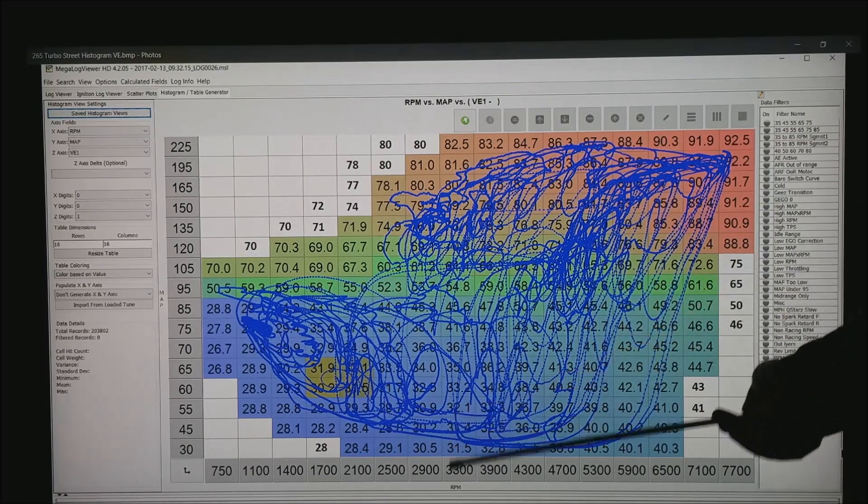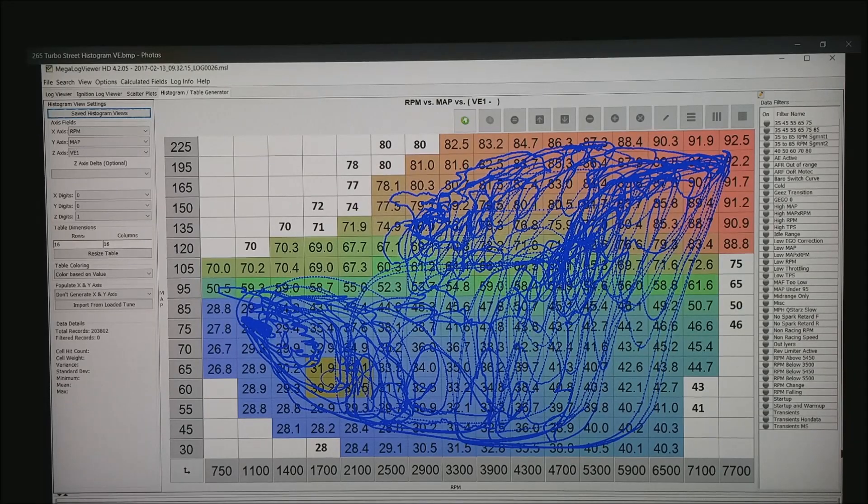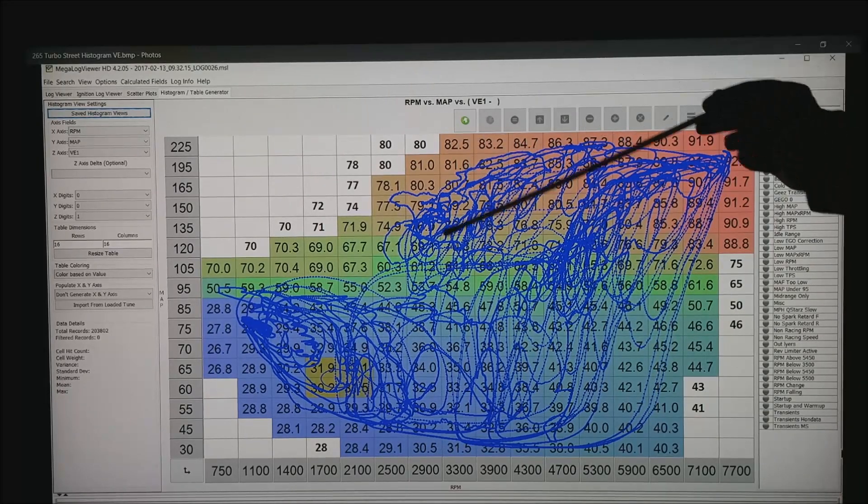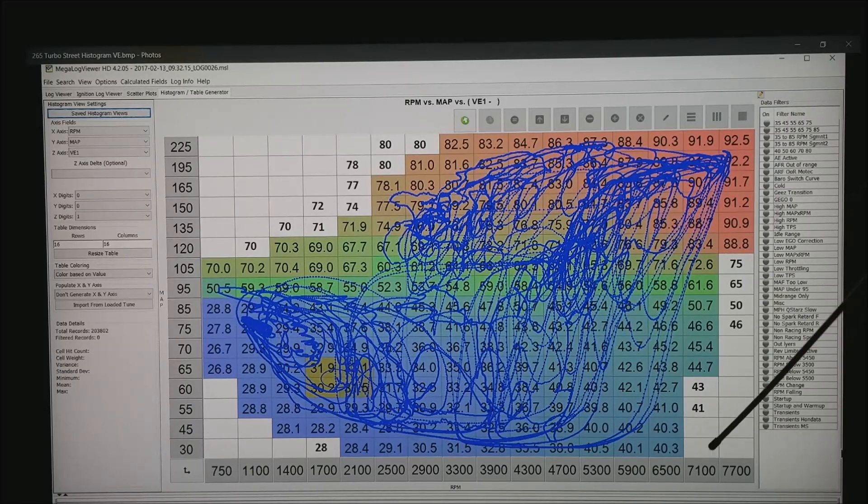Where in the lower left corner is the idle and low horsepower area. Top right is the full throttle area. Notice that there are a lot of cells you never get to while driving.